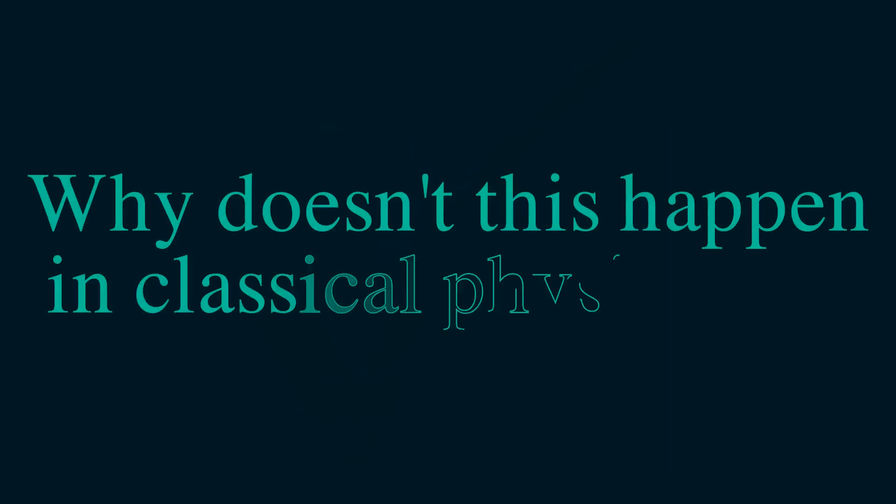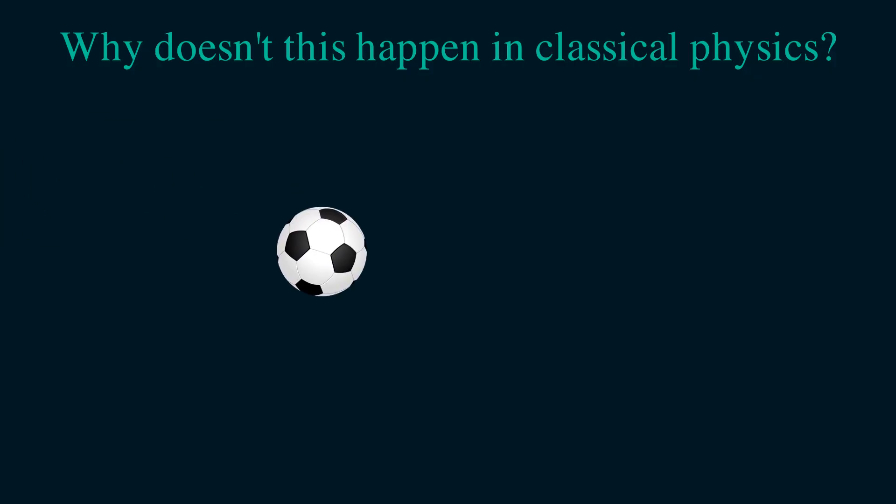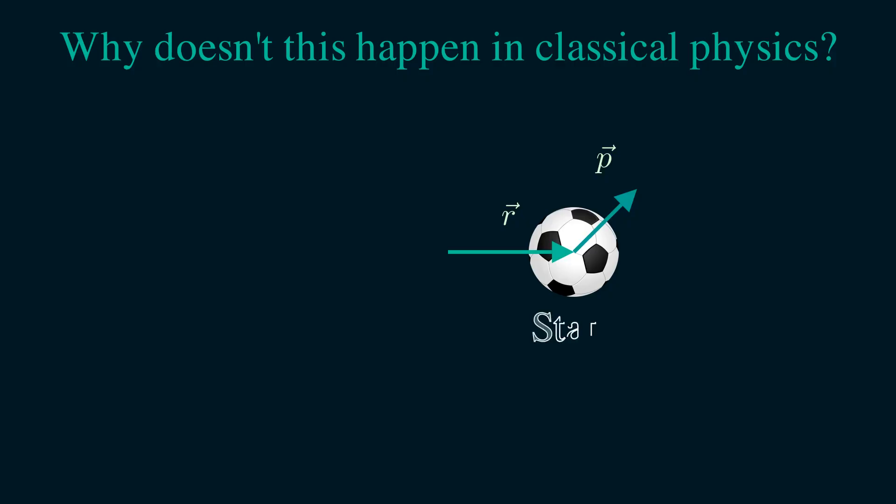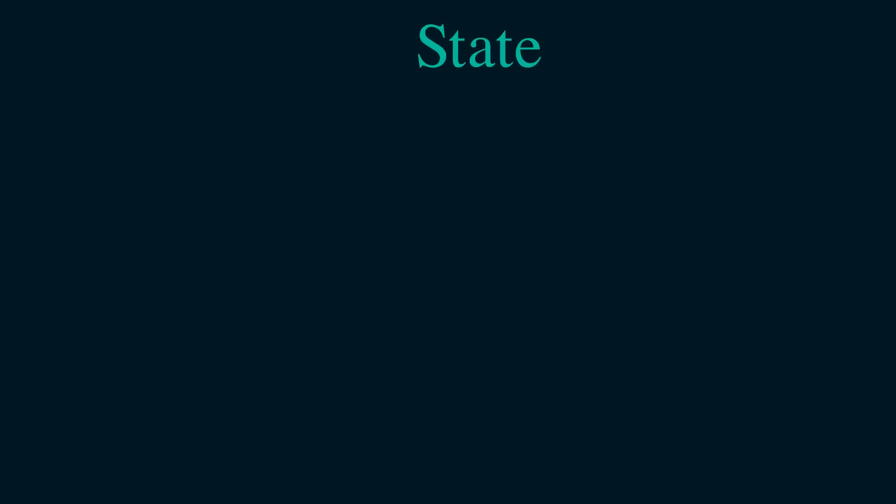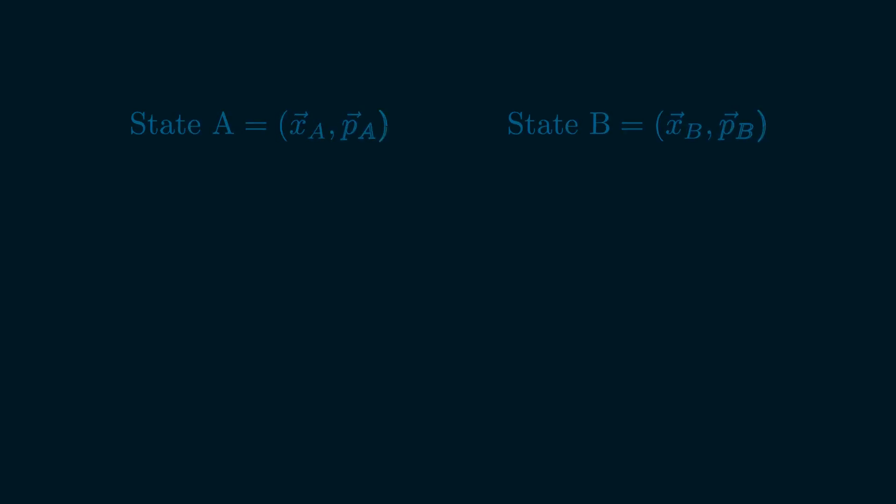But why don't we have superpositions in classical physics? Here's the big difference. In classical physics, objects always have definite properties. A football is either here or there. It has one position, one momentum, one state at a time. More precisely, the state of a classical particle is given by two things: its position and its momentum. But here's the thing. You can't meaningfully add two classical states together.